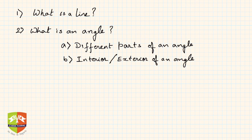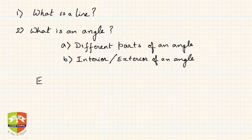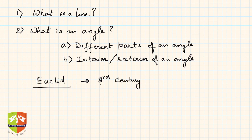History suggests that lines and angles have been part of human civilization and all its pursuits for a very long time. We get a lot of references and evidence of these elements being aggressively used in different applications in early history. The Greeks were pioneers in collating all this information, and there was a mathematician called Euclid who collated all this information in around 3rd century BC in his book called the Elements.